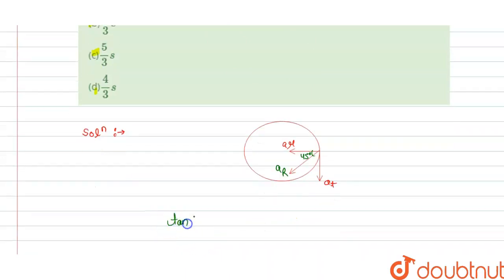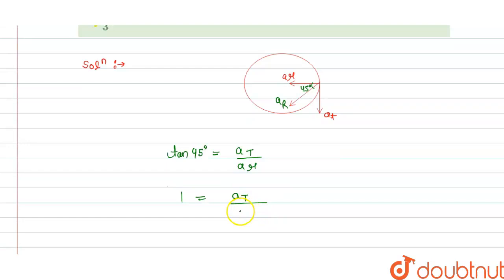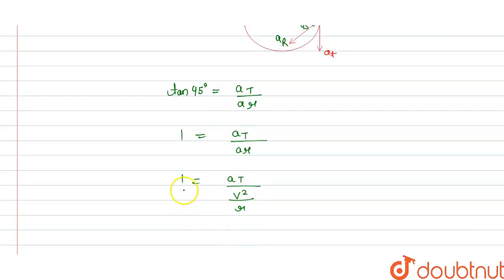We know that tan(45°) equals the ratio of tangential to radial acceleration, so at divided by ar. Since tan(45°) = 1, the tangential acceleration equals the radial acceleration, meaning at = ar. And the radial acceleration ar equals v squared divided by r.